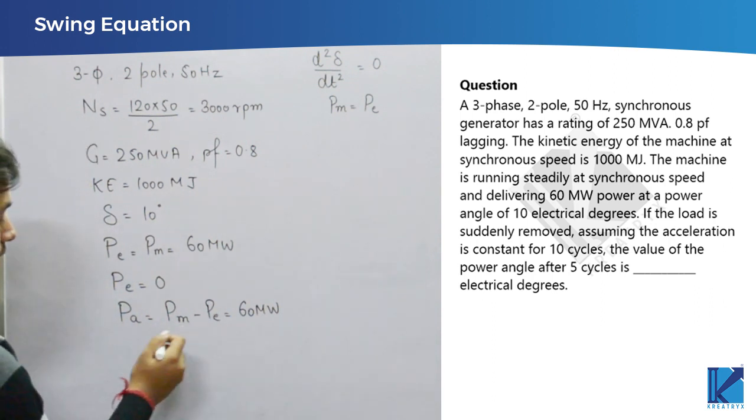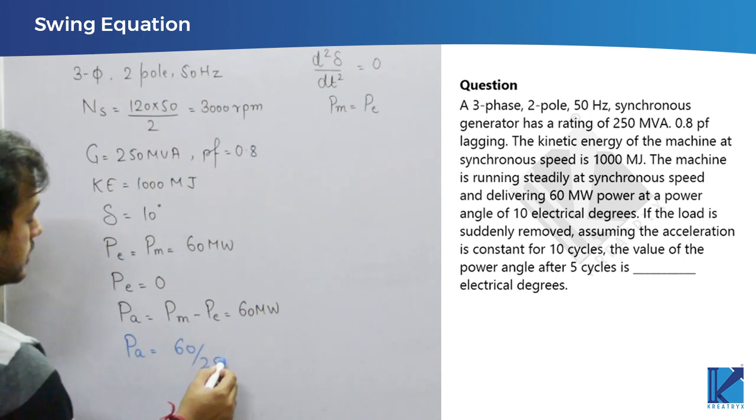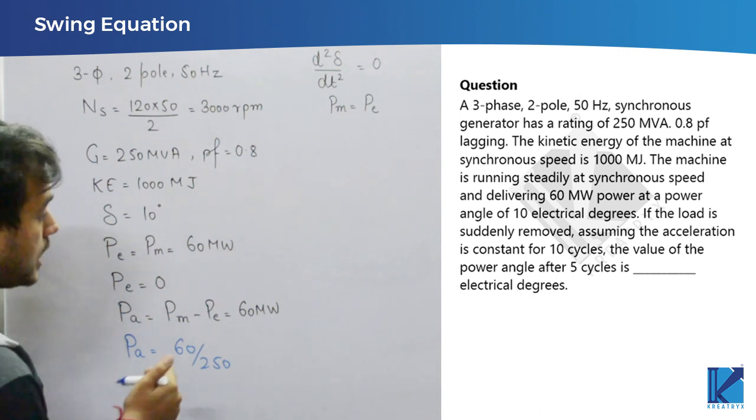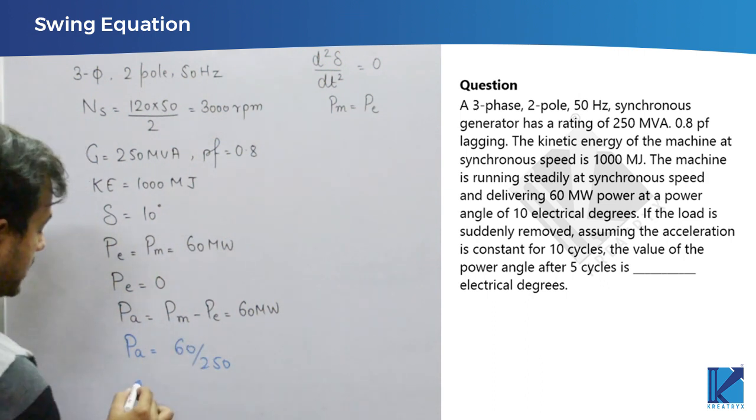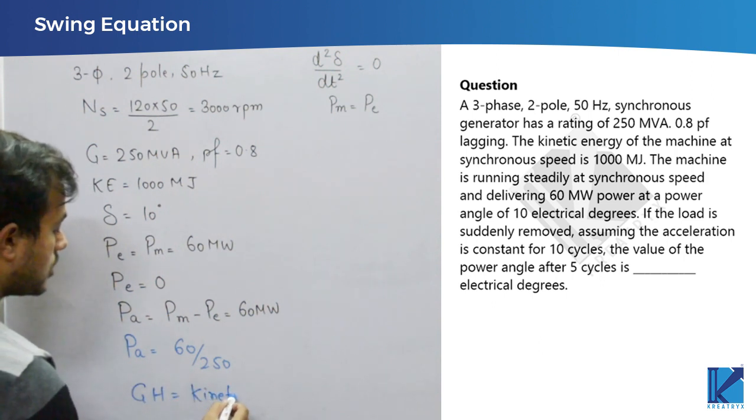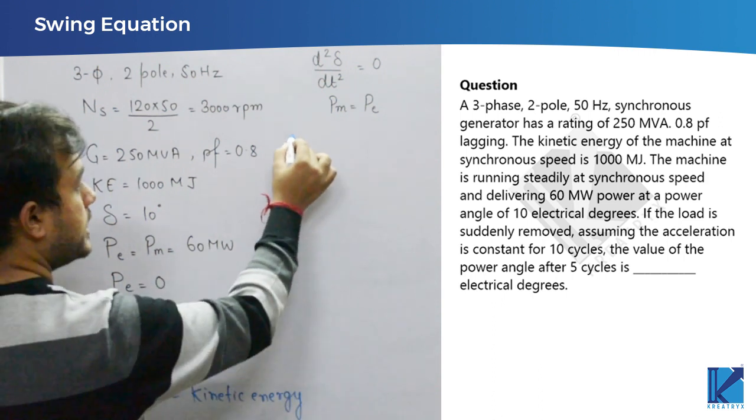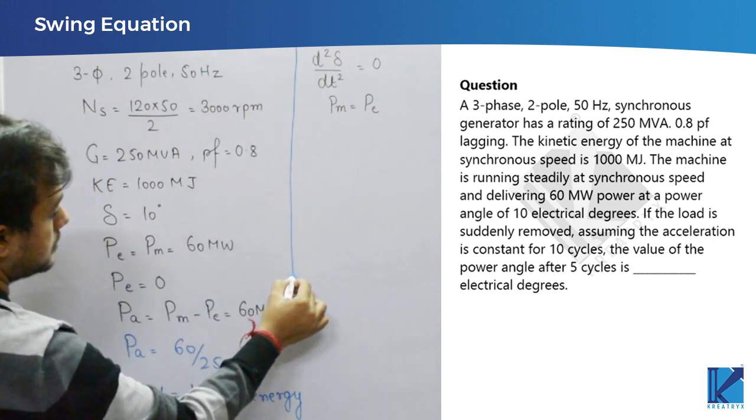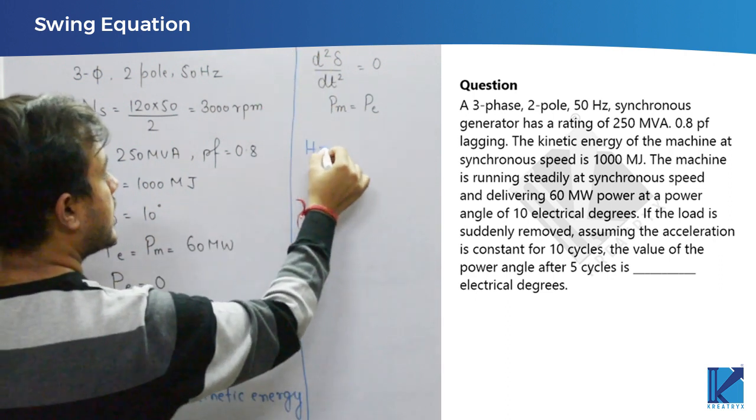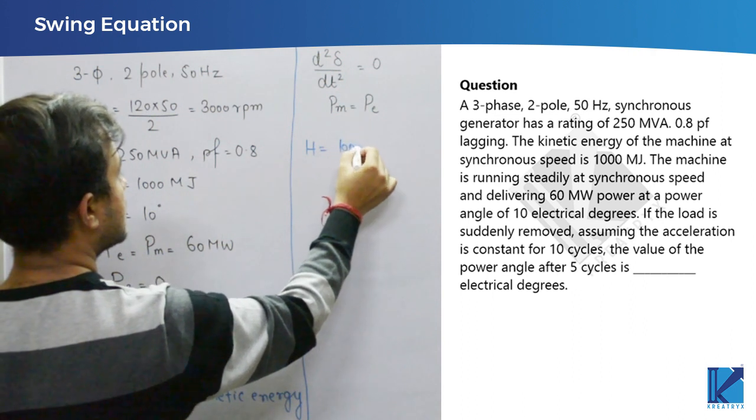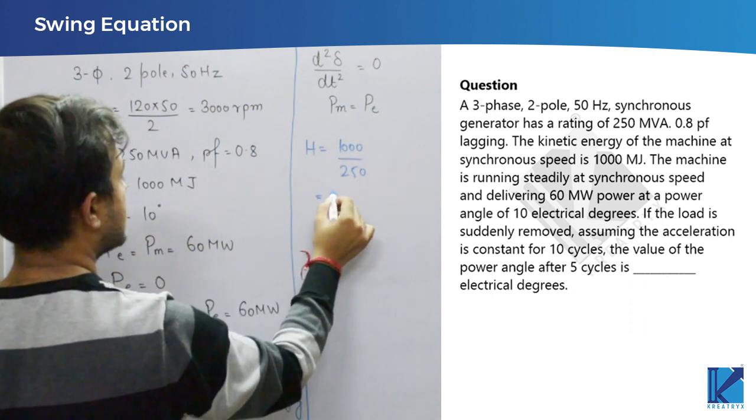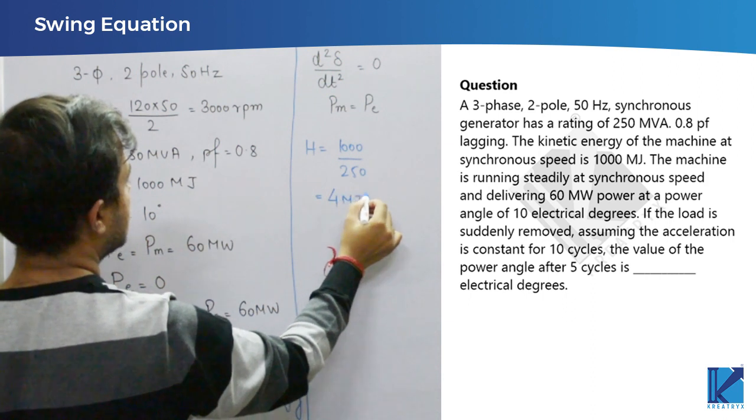So, first of all, let me bring this into per unit. It will be 60 by 250. That is, power upon base. That is in per unit. Now, if you want to find out H, then you have to remember GH is basically equal to kinetic energy of the machine. It means that H equal to 1000 by 250 which means 4 megajoule per MVA.